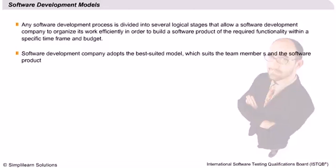These life cycles range from lightweight and fast methodologies, where time to market is the motive, through to fully controlled and documented methodologies, where quality and reliability are key reasons. Each of these methodologies has its place in modern software development and the most appropriate development process should be selected for each project. Each model has its own phases and the order in which they are carried out. This will have a big impact on the testing that is carried out.